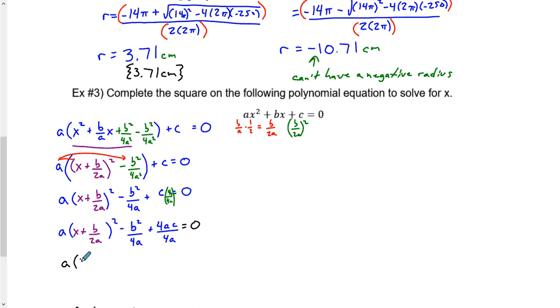Then I would need to get a common denominator here in order to add it. Plus c equals 0. To get a common denominator, multiply this one by 4a over 4a. So I get 4ac over 4a. And now that these are the same, it would equal 0. I'd have an a times x plus b over 2a squared.